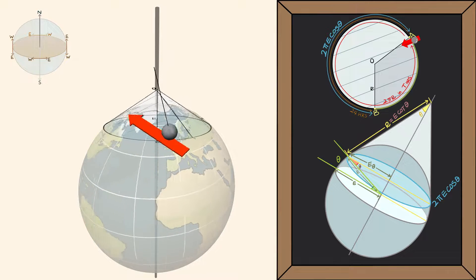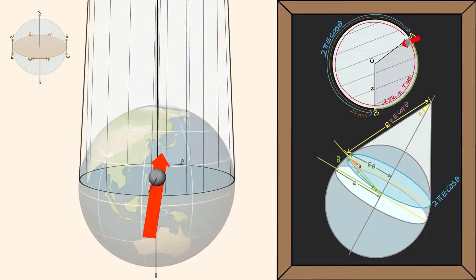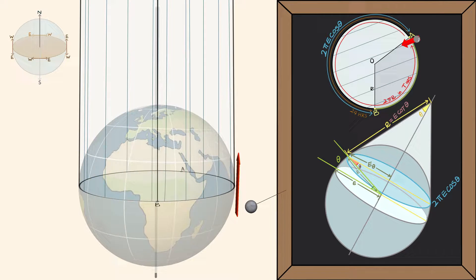And if we go the other direction, we notice the cone getting taller and taller until it just becomes a cylinder, and the pendulum doesn't rotate at all.